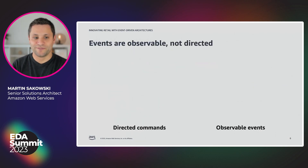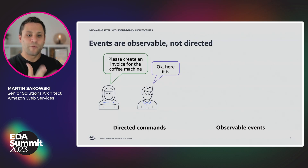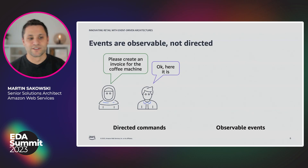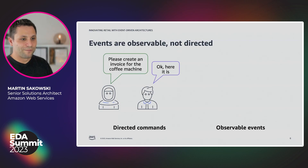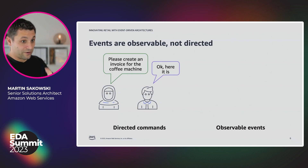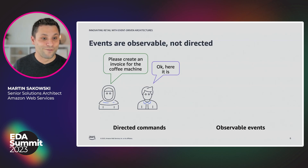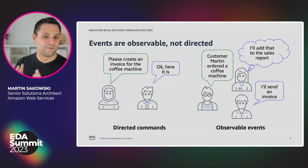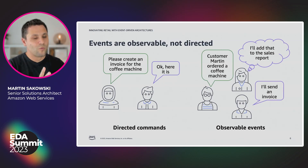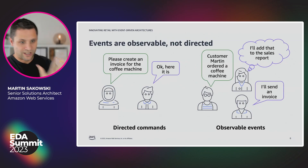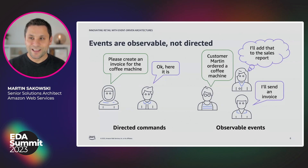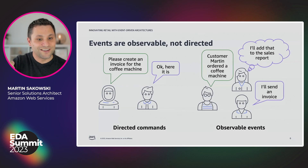There's something important to know: events are not commands. Commands are directed towards a recipient — like 'can you please create an invoice for this coffee machine?' and then the recipient creates the invoice and returns it. Events are different. Events can be observed by consumers, and those consumers know what to do with that event. The event would be 'customer Martin ordered a coffee machine,' and then someone knows that whenever something is sold, an invoice has to be created and sent.